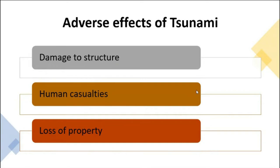Now, the various adverse impacts of tsunamis. First is obvious damage to structures. Powerful tsunami waves rushing toward the coast can damage or destroy physical structures and infrastructure like houses, buildings, roads, railway networks, communication systems, ships, fishing boats, power lines, and even undersea optic fiber internet cables — causing reduction in internet speed even in areas far from the coast.